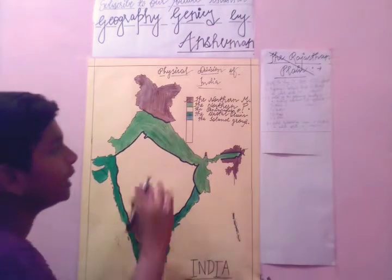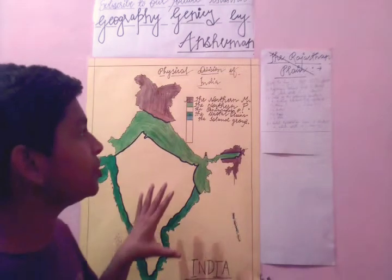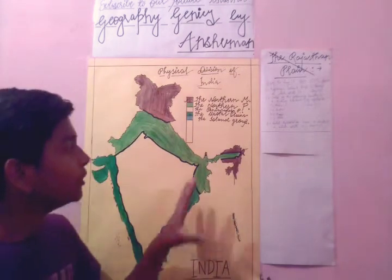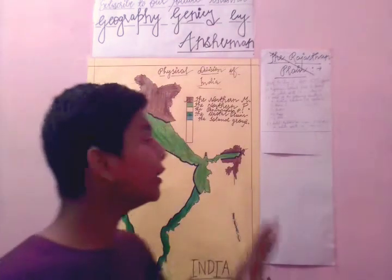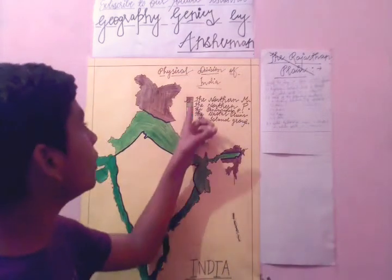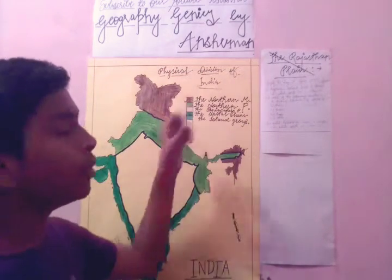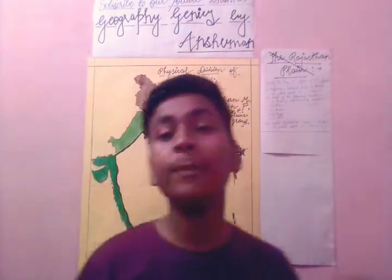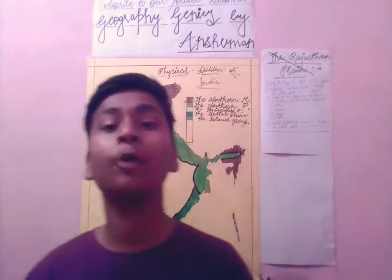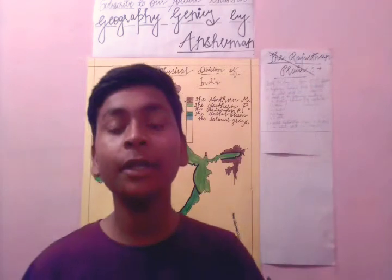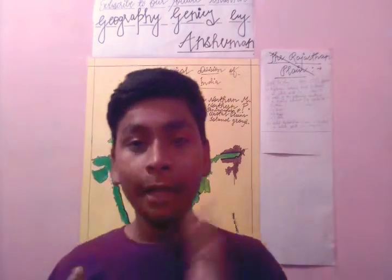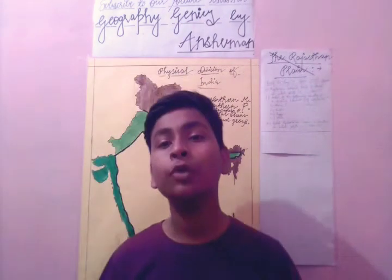So this green part — actually everything has been changed here, we have modified everything. You can see that brown part we have taken it off because we have finished the Northern Mountains till yet. And if you have not understood the Northern Mountains, please write in the comment section.